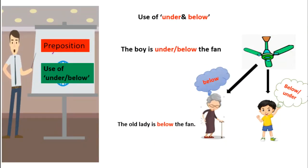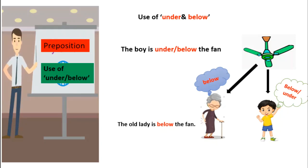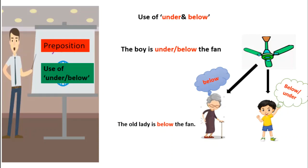Then the use of 'under' and 'below'. The boy is under or below the fan. When something is perpendicularly or directly below something, we can use both 'under' and 'below'. But if something is angularly below something, like the old lady, we use 'below'. Like, the old lady is below the fan.